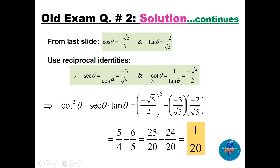Secant theta is the reciprocal of cosine, so minus 3 over square root of 5. Cotangent theta is the reciprocal of tan. Now cotangent squared theta — take the value of cotangent theta and square it — that gives 5 over 4. There is a minus in the question, and secant is minus 3 over square root of 5 times tan, which is also negative, so minus times minus is plus. We get 5 over 4 minus 6 over 5. The LCD is 20, giving a final answer of minus 1 over 20.